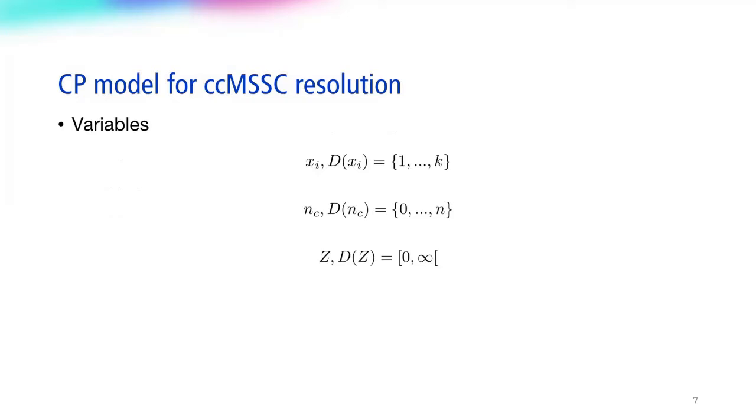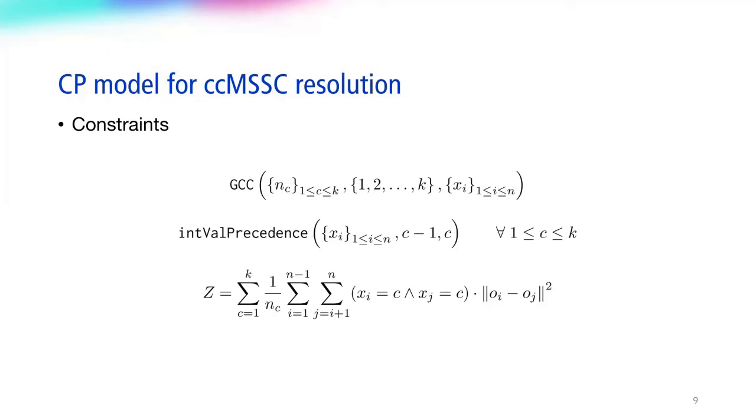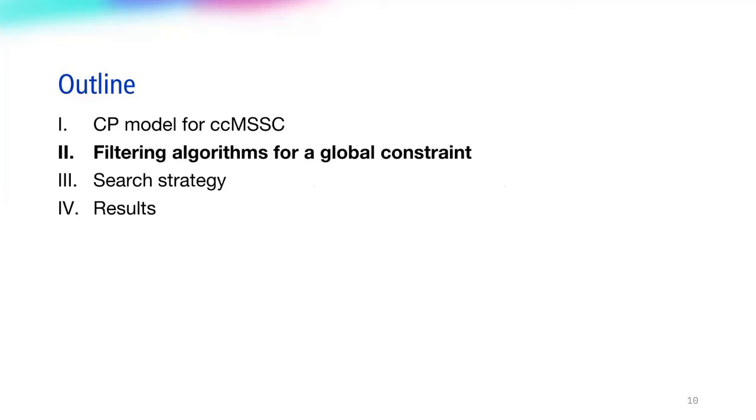Here, xi are representative variables that link observation i to class C. And c is the cardinality of class C, and z is the total within-cluster sum of squares, which we want to minimize. These variables are linked by the following constraints, in particular, an integer value precedence that breaks value symmetries. A regular constraint could achieve the same result, if available.